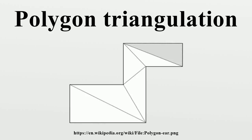In computational geometry, polygon triangulation is the decomposition of a polygonal area P into a set of triangles, i.e., finding a set of triangles with pairwise non-intersecting interiors whose union is P. Triangulations may be viewed as special cases of planar straight-line graphs.